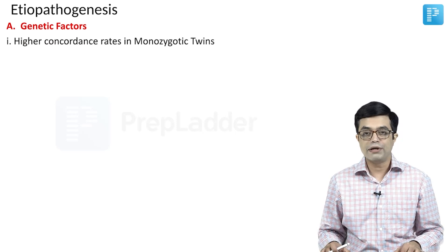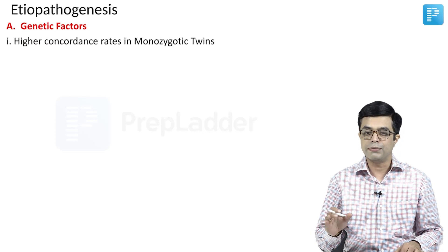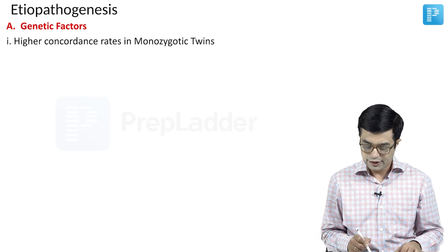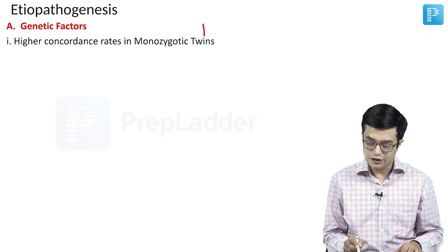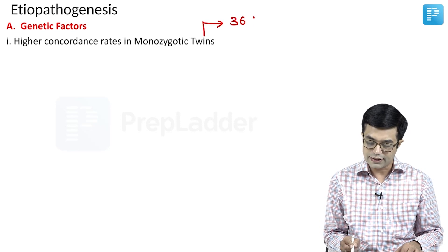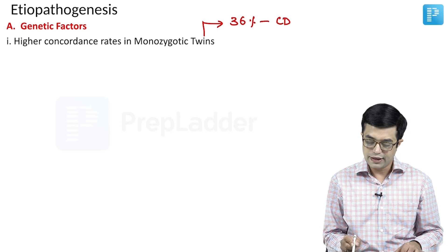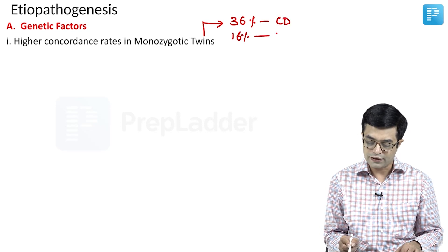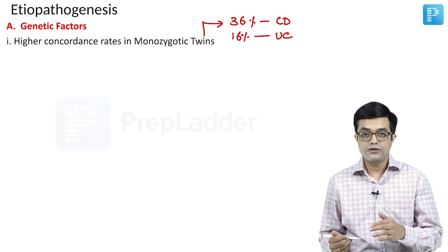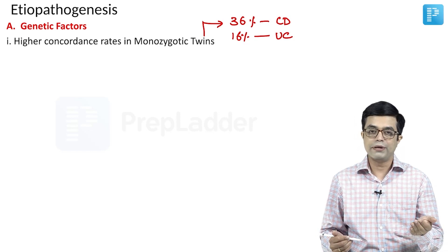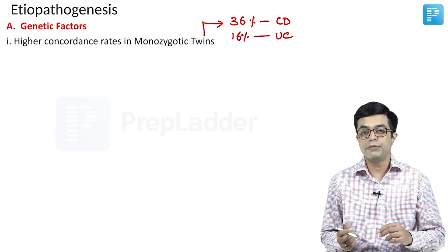First is higher concordance rates have been found in monozygotic twins compared to dizygotic twins. Nelson says that concordance rate in monozygotic twins is 36% in case of Crohn's disease and 16% in case of ulcerative colitis. So, if somebody asks you which disease out of these two will have a higher risk of developing in monozygotic twins, the answer will be Crohn's disease.